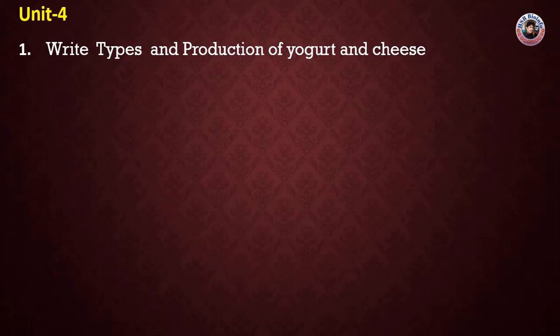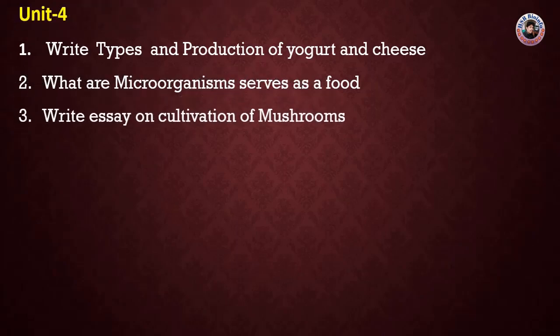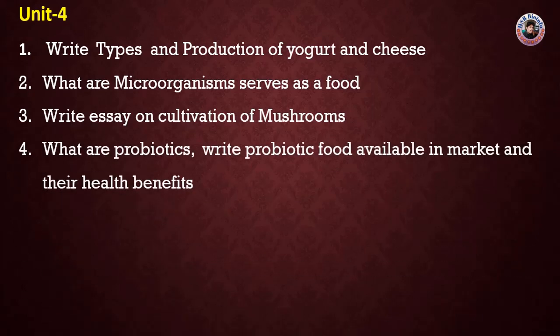Coming to Unit 4 — First question: Write about the types and production of yogurt and cheese. Second question: What microorganisms are used as food? Third question: Write about the cultivation of mushrooms — very important. Fourth question: What are probiotics? Probiotic foods are available in the market and have health benefits.